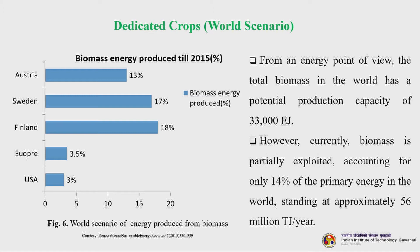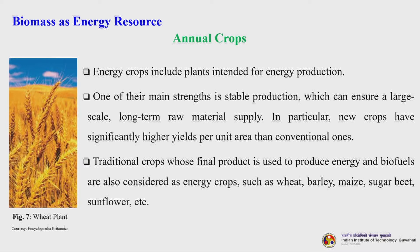Looking at biomass energy production in 2015 by percentage, Finland leads, followed by Sweden, Austria, Europe broadly, and then the United States. Asian countries contribute very little. From an energy standpoint, total global biomass has a potential production capacity of 33,000 exajoules; however, biomass currently accounts for only 14 percent of primary energy in the world, standing at approximately 56 million terajoules per year.